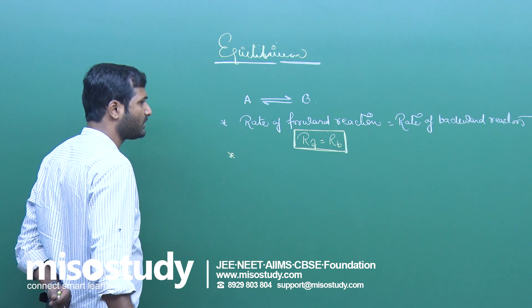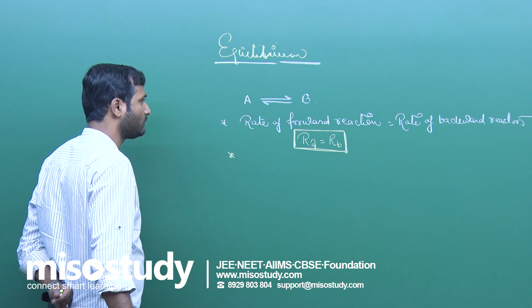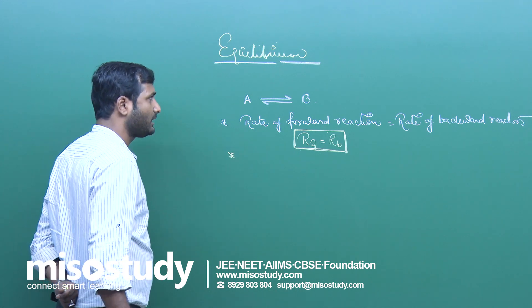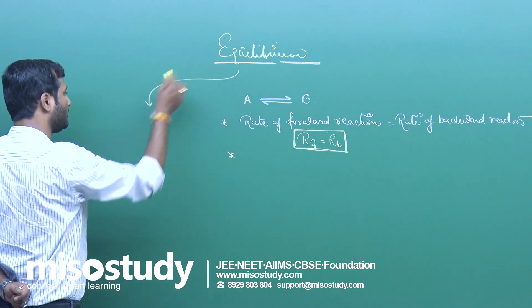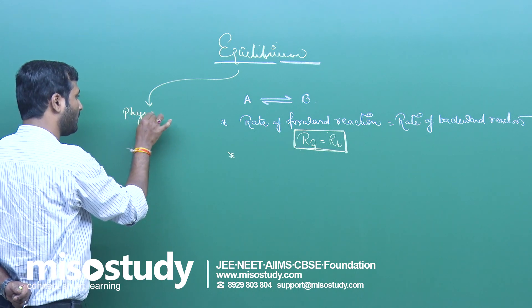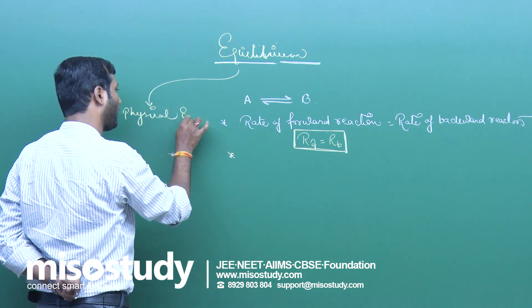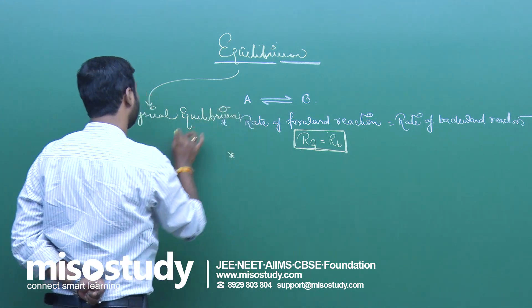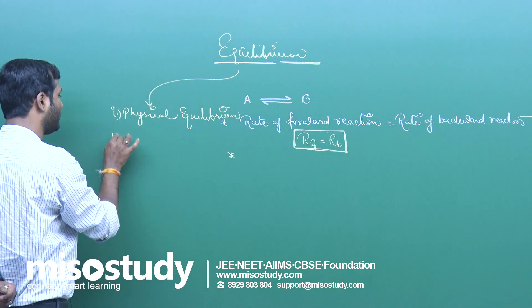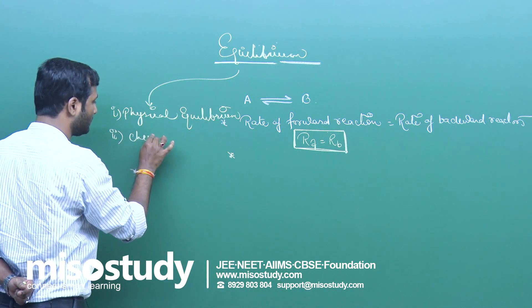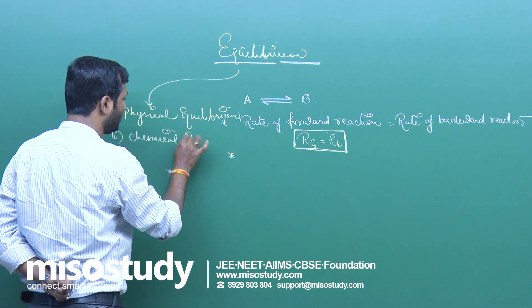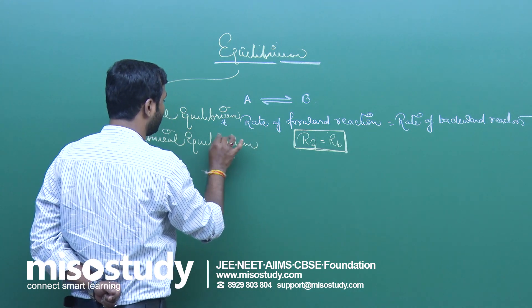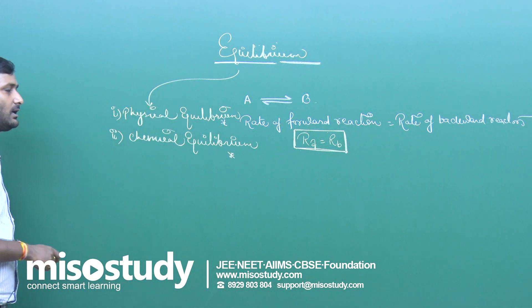These are the general formulas discussed during regular lectures, but today I am giving you the formulas related to this chapter. We know there are two types of equilibrium: physical equilibrium and chemical equilibrium.